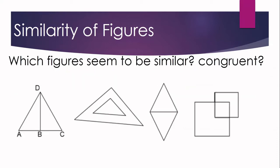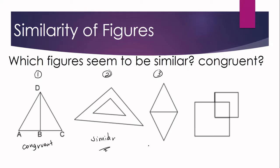Let us consider some figures and determine which seem to be similar and which seem to be congruent. Figure number one seems to be congruent because it has the same shape and the same size. Figure number two seems to be similar — they are both triangles, but they have different sizes, so they cannot be congruent. Figure number three is congruent, and figure number four seems to be similar.